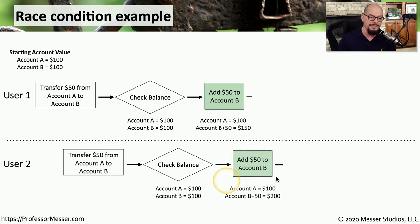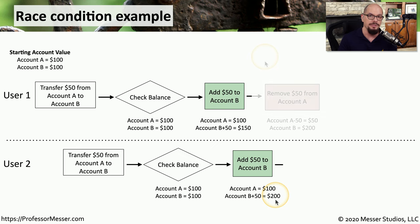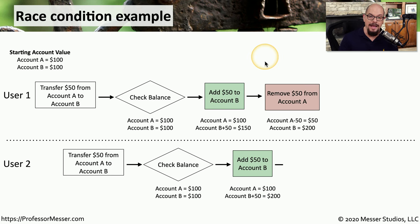User 2 performs exactly the same function and adds $50 to account B. Account A still has $100, and account B has increased by $50 to $200. Since this is a transfer of $50 and we've added $50 to account B, we need to remove the $50 from account A. If we remove it from that $100 balance, account A's balance goes down to $50.